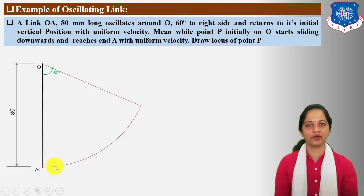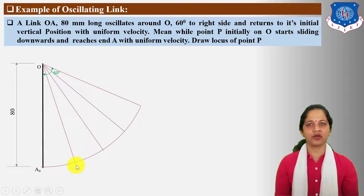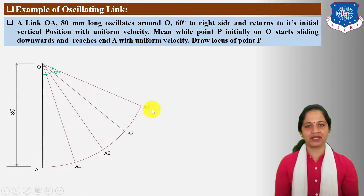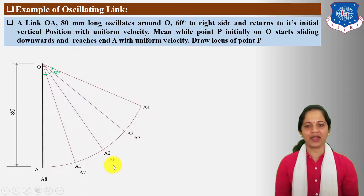Next, take uniform positions of the link. Divide the 60-degree angle into equal 4 parts at 15-degree intervals. Mark the positions of point A as A1, A2, A3, A4. From A4 position, this link returns to its original position. So for the return oscillating motion, locate uniform positions of the link as A5, A6, A7, and A8.